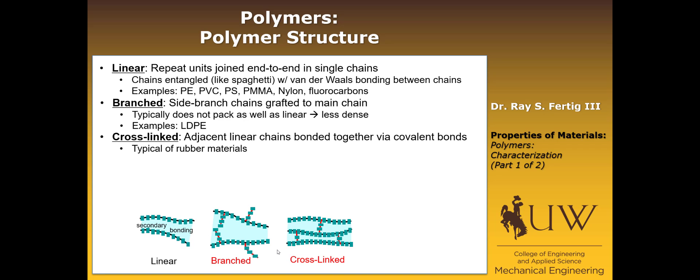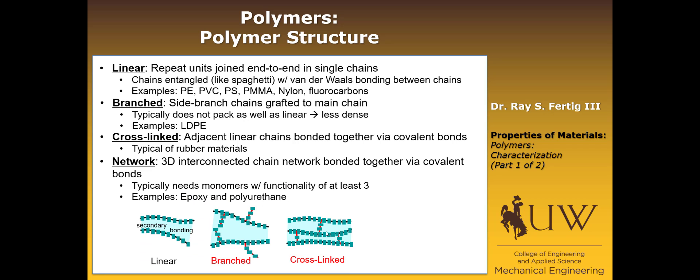The next structure type is cross-linked. Here's our linear chains, but now we have covalent bonds that exist between these chains via cross-links. This is how we get behavior of rubber band or rubber materials in general. Think of a rubber band - you pull it far apart, and there has to be something that pulls it back together into its original configuration. Those cross-links provide that restorative force.